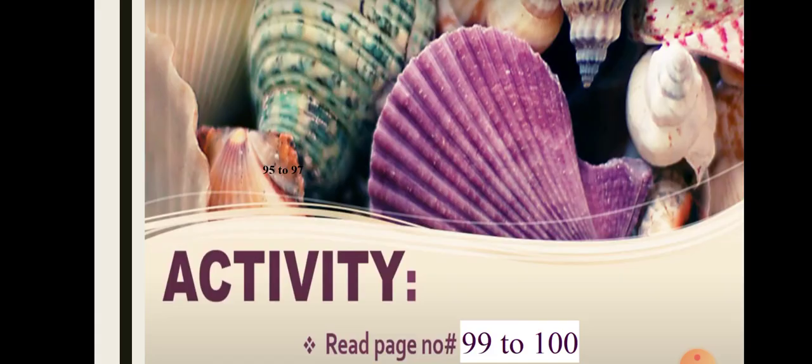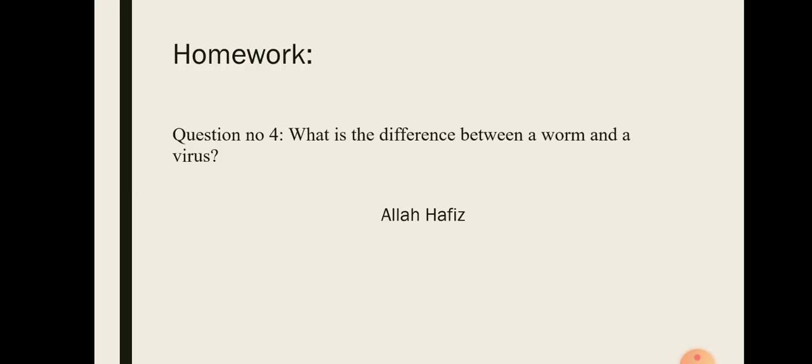These are the sources of security threats for today. Please go through pages 99–100 and read them twice. If you find any difficulty, ask me in your Q&A session via WhatsApp. You also have homework from your exercise: Question number 4 — what is the difference between a worm and a virus? I have covered this in today's lecture, so listen carefully and write down the differences in a separate sheet. In the next lecture we will start common modes of security threats. Allah Hafiz.